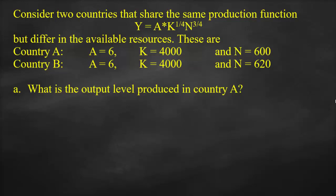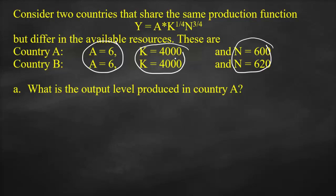Consider two countries that share the same production function. Output is equal to A multiplied by capital to the power 1/4 (0.25) multiplied by labor to the power 3/4 (0.75), but they differ in available resources. Both Country A and Country B have the same technology/productivity A = 6 and the same capital of 4,000, but different labor: Country A has 600 while Country B has higher labor of 620.